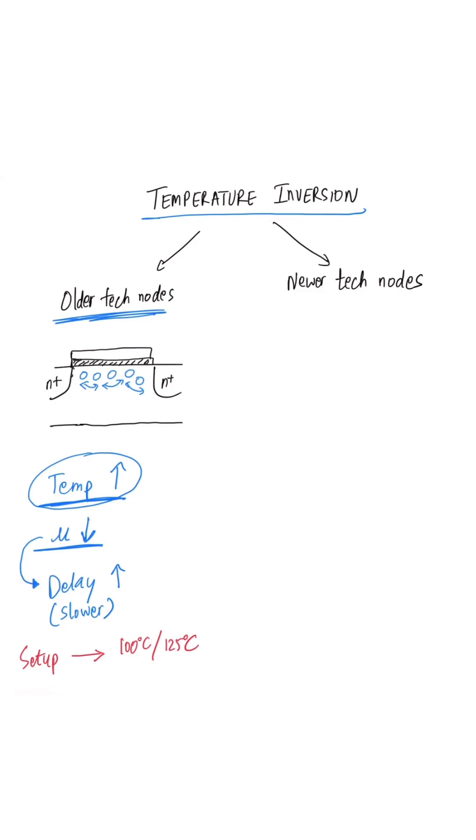But this temperature dependence is slightly different on new technology nodes, especially when we move to below 20 nanometers, or in modern designs where almost all companies are working under 10 nanometers. On lower technology nodes, as the temperature is increased, we see two things happening.